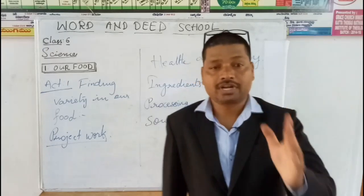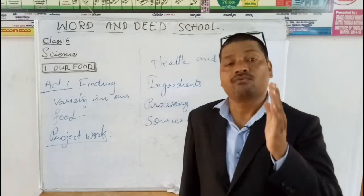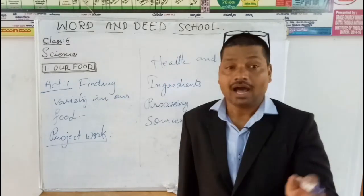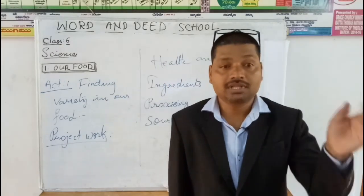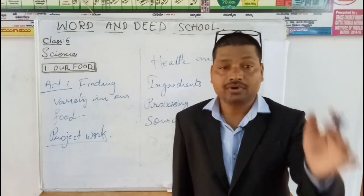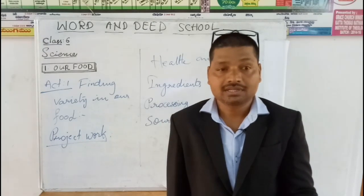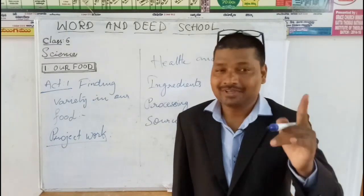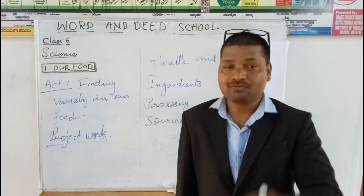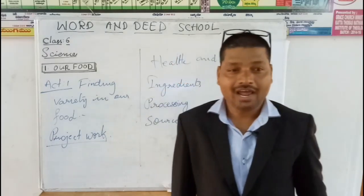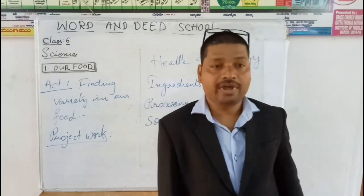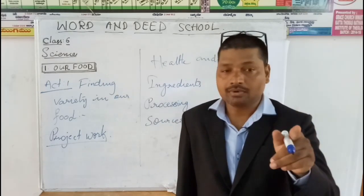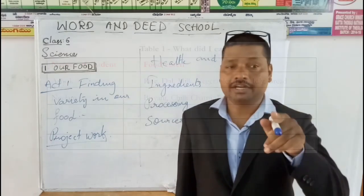What you have to do is try to find answers for the following questions: Are there any common food items in the list of yours and your friends? Obviously there will be common food items. Count the number of food varieties you have listed in the table displayed on the screen.